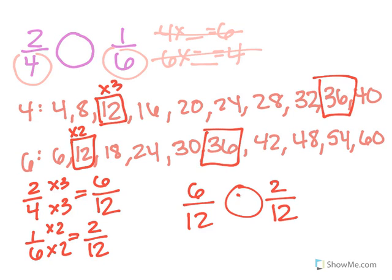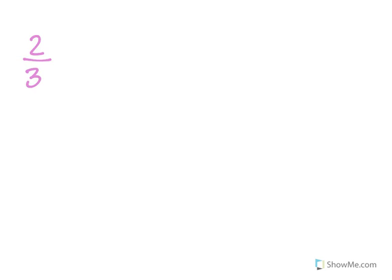So now I can compare and see that 6 twelfths is bigger than 2 twelfths. I totally forgot to tell you to pause. So let's do one more. I want you to practice doing 2 thirds versus 7 eighths. Pause the video and practice finding the multiples. Make sure you have a paper with you. Try to get it to the same denominator. When you're ready, unpause the video — or if you want to do it step by step with me, you're more than welcome to.